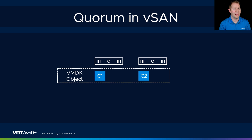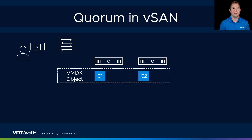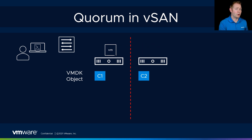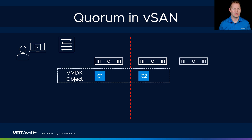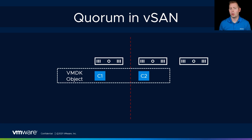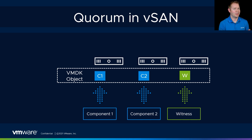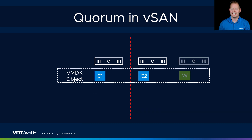Let's say some kind of network partition happens — an administrator logs into our switch and mistypes something. Now we've got a situation where host 1 can't communicate with host 2. They both have healthy copies of the data, but where should the VM be running — on host 1 or host 2? The way vSAN addresses it is through a quorum-based system. We have a tiebreaker in the environment, and that's our witness component. We've got data components and witness components — they're all components at the end of the day.